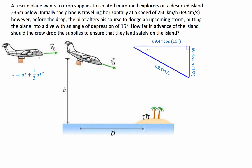What we've got is a plane that's travelling horizontally at 250 kilometres an hour. Its altitude is 235 metres. What happens is just before he drops the package, he goes into a dive with an angle of depression of 15 degrees. We're asked to figure out how far before the island he drops the package, so the package goes safely down to the people on the island.